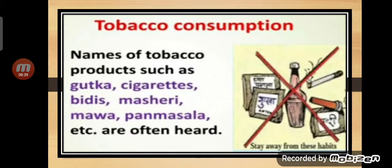Names of tobacco products such as gutka, cigarettes, bidis, missiri, mana, paan, masala, etc., are often heard. Some people even brush their teeth with tobacco — they roast tobacco and brush their teeth with it. But you have good toothpaste or tooth powder; use that. Why would you use tobacco?